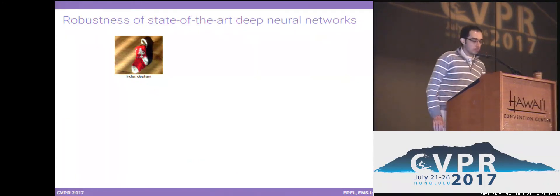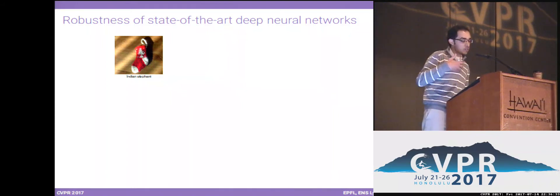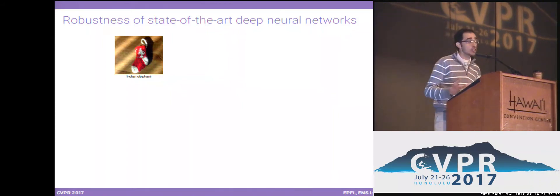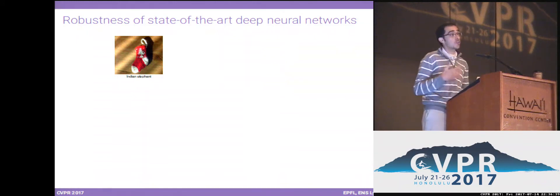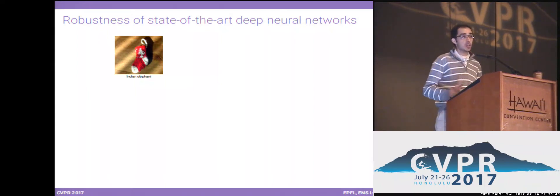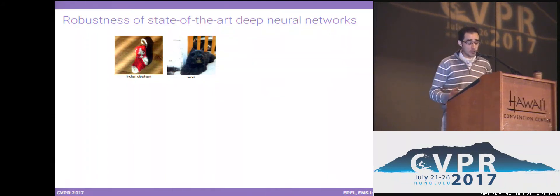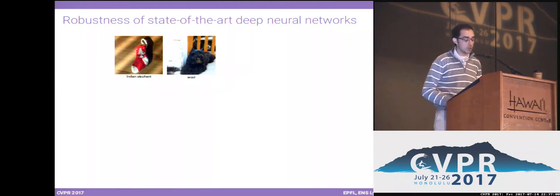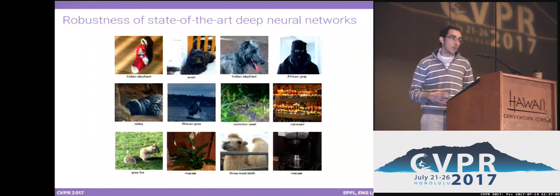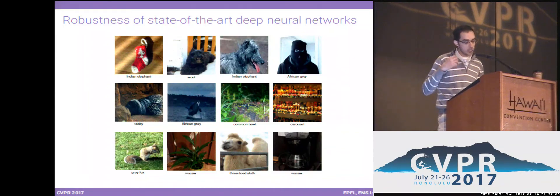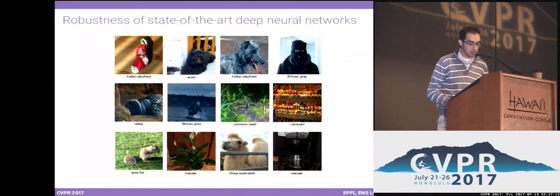Visually, for example, an image of a Christmas stocking originally classified as a Christmas stocking is now classified as an Indian elephant after adding the universal perturbation. Another image originally classified as a Bouvier de Flandre — a type of dog — becomes misclassified as wool. All these images had this single universal perturbation added to cause the classifier to misclassify. This is a mix of images taken personally as well as images from the validation set.